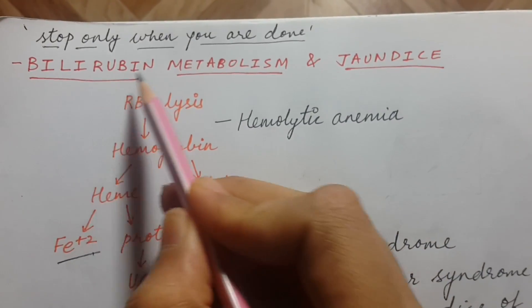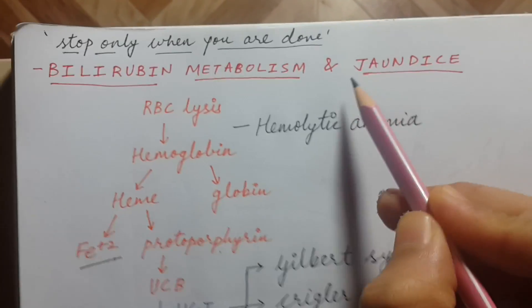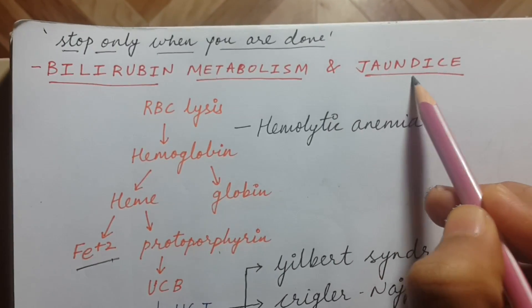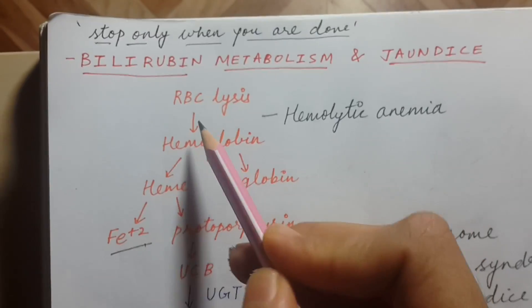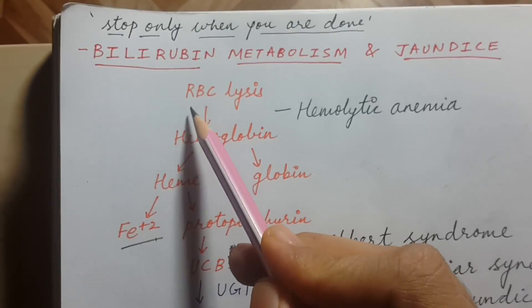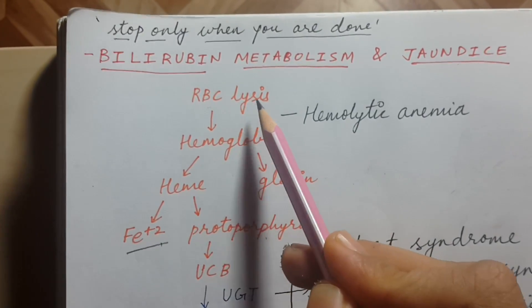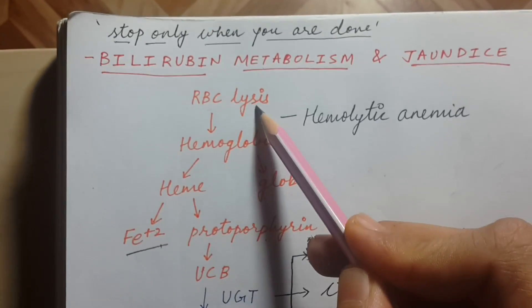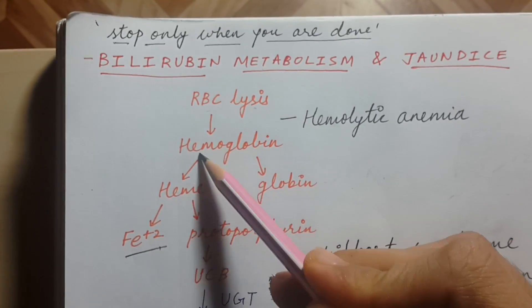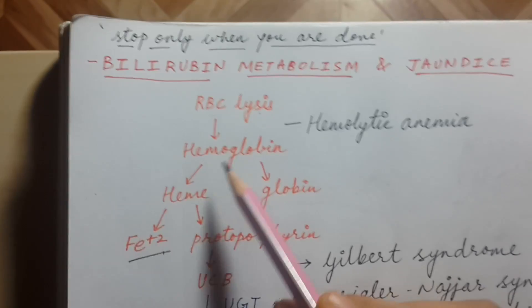We will be discussing bilirubin metabolism and cause of jaundice. It first starts with RBC lysis. From RBC we get hemoglobin.